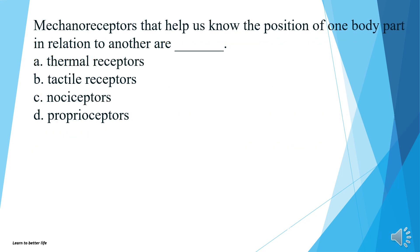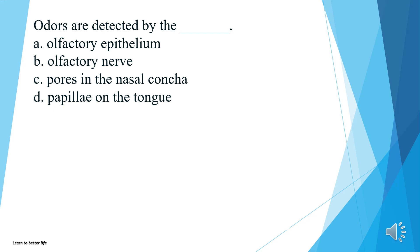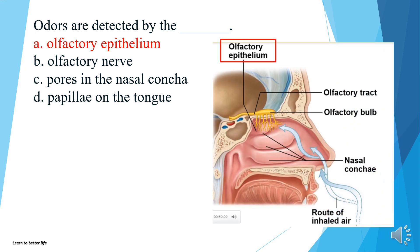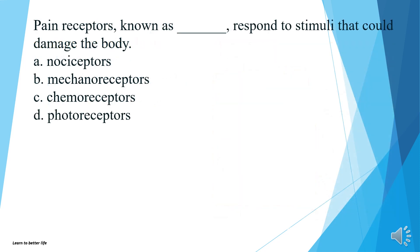Mechanoreceptors that help us know the position of one body part in relation to another are thermoreceptors, tactile receptors, nociceptors, or proprioceptors? The answer is D, proprioceptors. Odors are detected by the olfactory epithelium, olfactory nerve, pores in the nasal concha, or papillae on the tongue? The answer is A, olfactory epithelium. Pain receptors, known as what, respond to stimuli that could damage the body? Nociceptors, mechanoreceptors, chemoreceptors, or photoreceptors? The answer is A, nociceptors.